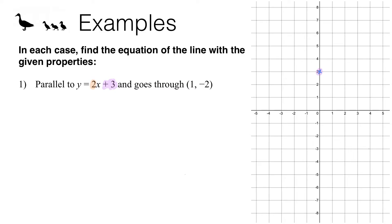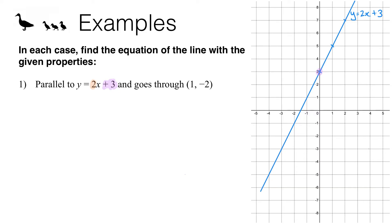That means every time I go one unit across I need to go two units up. I can plot a few points like this to help me out and then I'll use a ruler to join them up with a straight line.